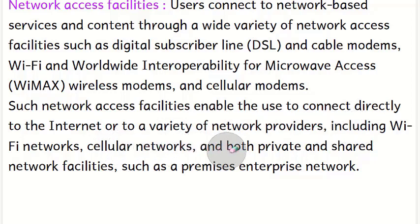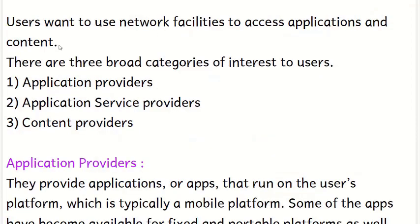Such network access facilities — including Wi-Fi networks and cellular networks, which can be private or shared — enable the user to connect directly to the internet, provided by various network providers. The user uses these network facilities to access applications and content, which fall into three categories of interest to users.